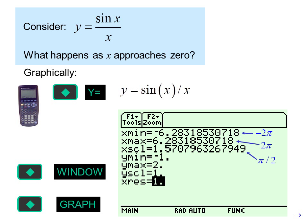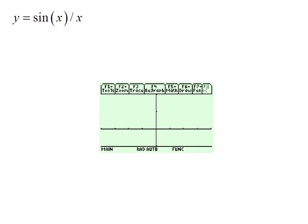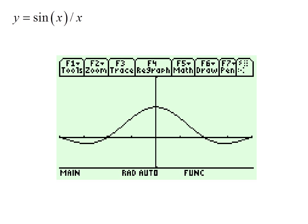Then we press diamond Graph, and there's our graph. It looks like y equals 1 when x equals zero, but we can't really tell for sure because the y-axis covers up the point. What we really know is that because we're dividing by x, the function is undefined at x equals zero. So even though we can't see it, there should be a hole right there.